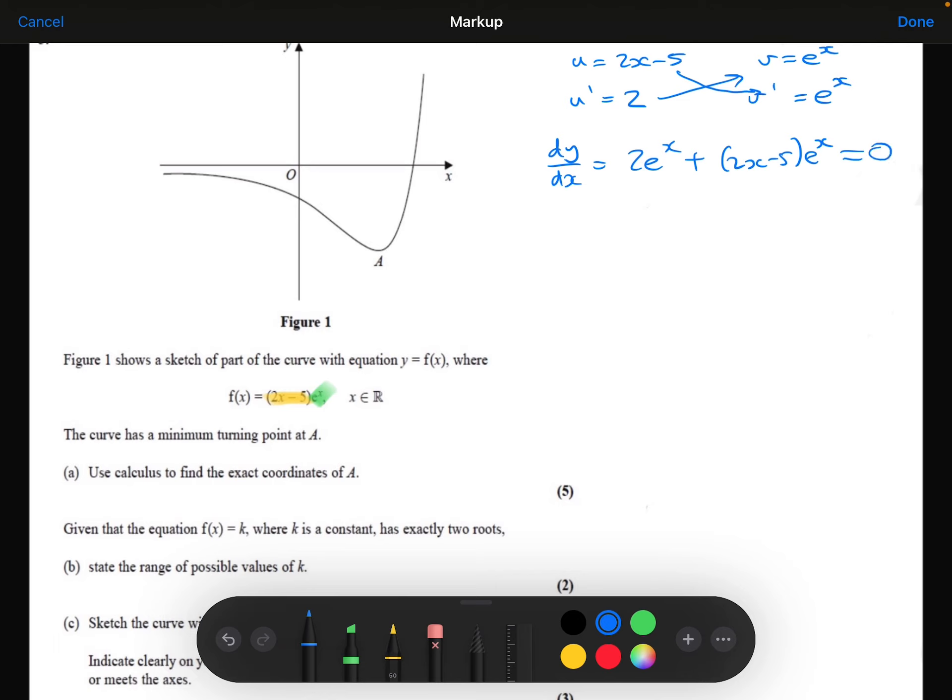Let me factorise the e to the power x outside. So that's going to give me a 2 plus 2x minus 5, which I can simplify to be 2x minus 3. Now, I know e to the power x can never equal 0, so the only part that can equal 0 is the 2x minus 3. So therefore, x is going to equal 3 over 2.